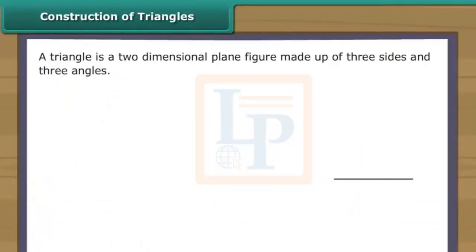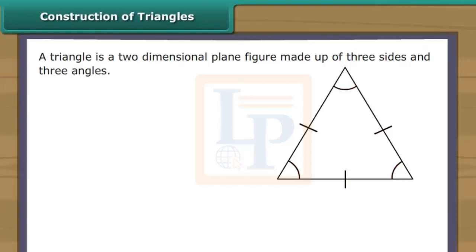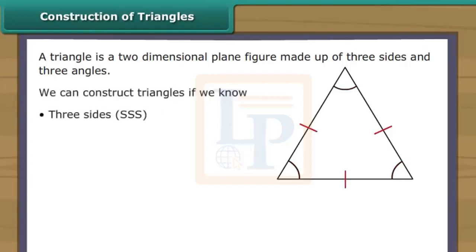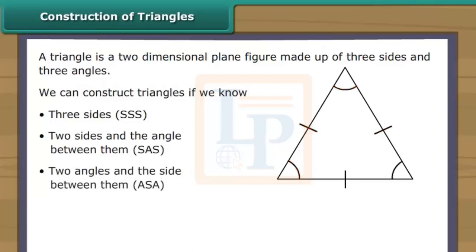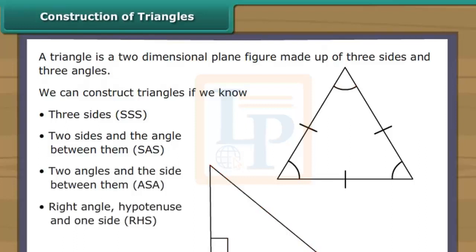A triangle is a two-dimensional plane figure made up of three sides and three angles. We can construct triangles if we know: three sides (SSS); two sides and the angle between them (SAS); two angles and the side between them (ASA); or right angle, hypotenuse and one side (RHS). Let us learn to construct all four types of triangles.